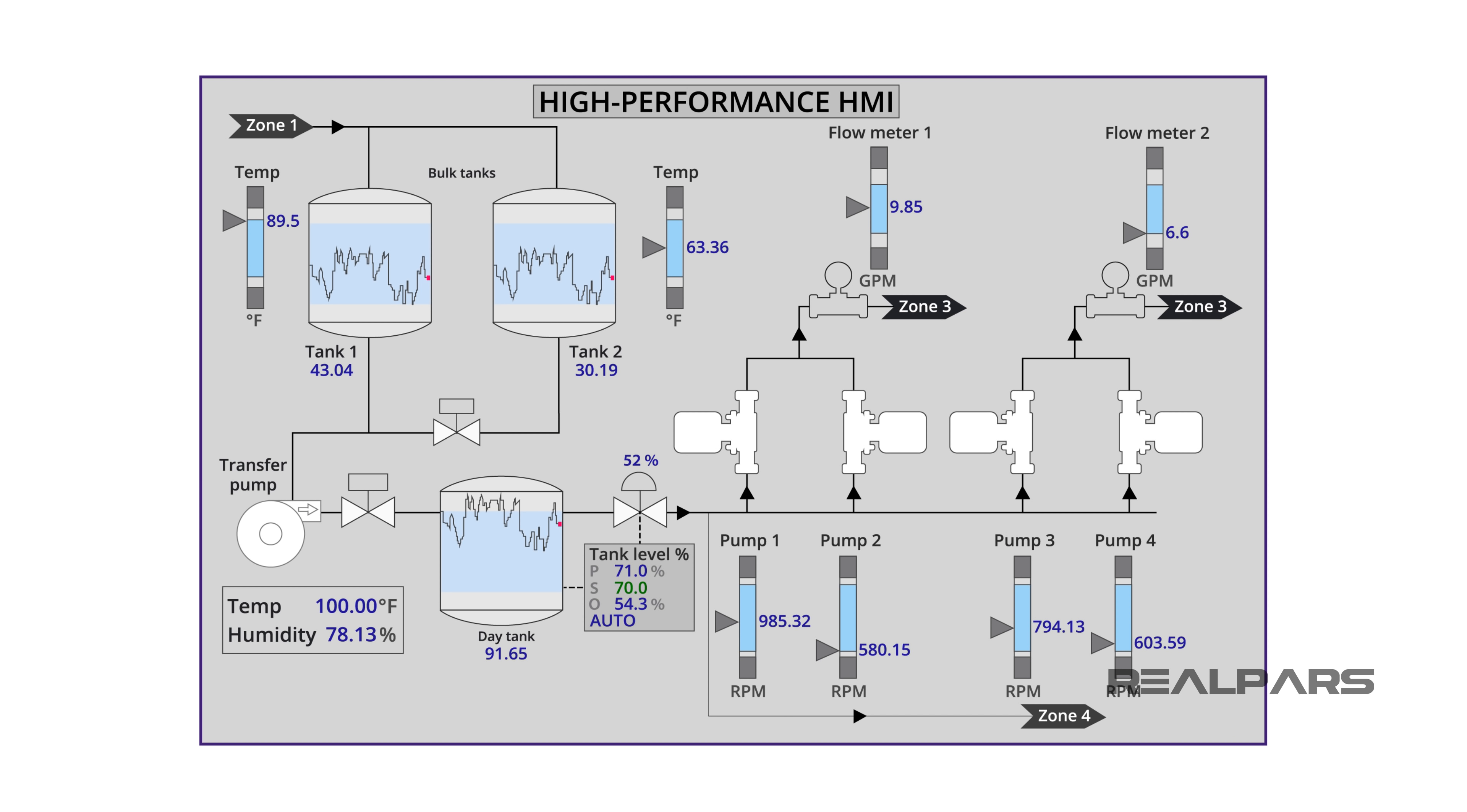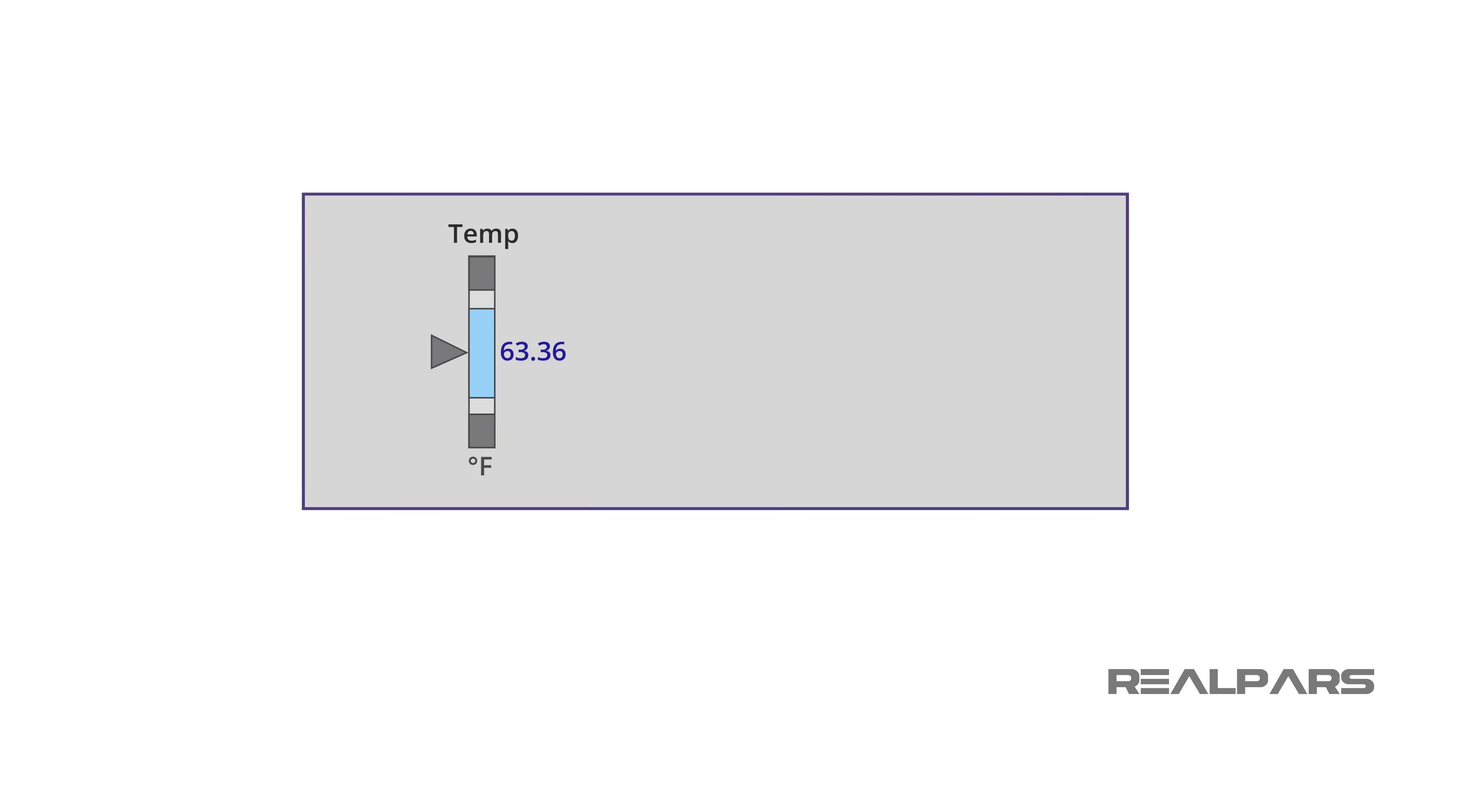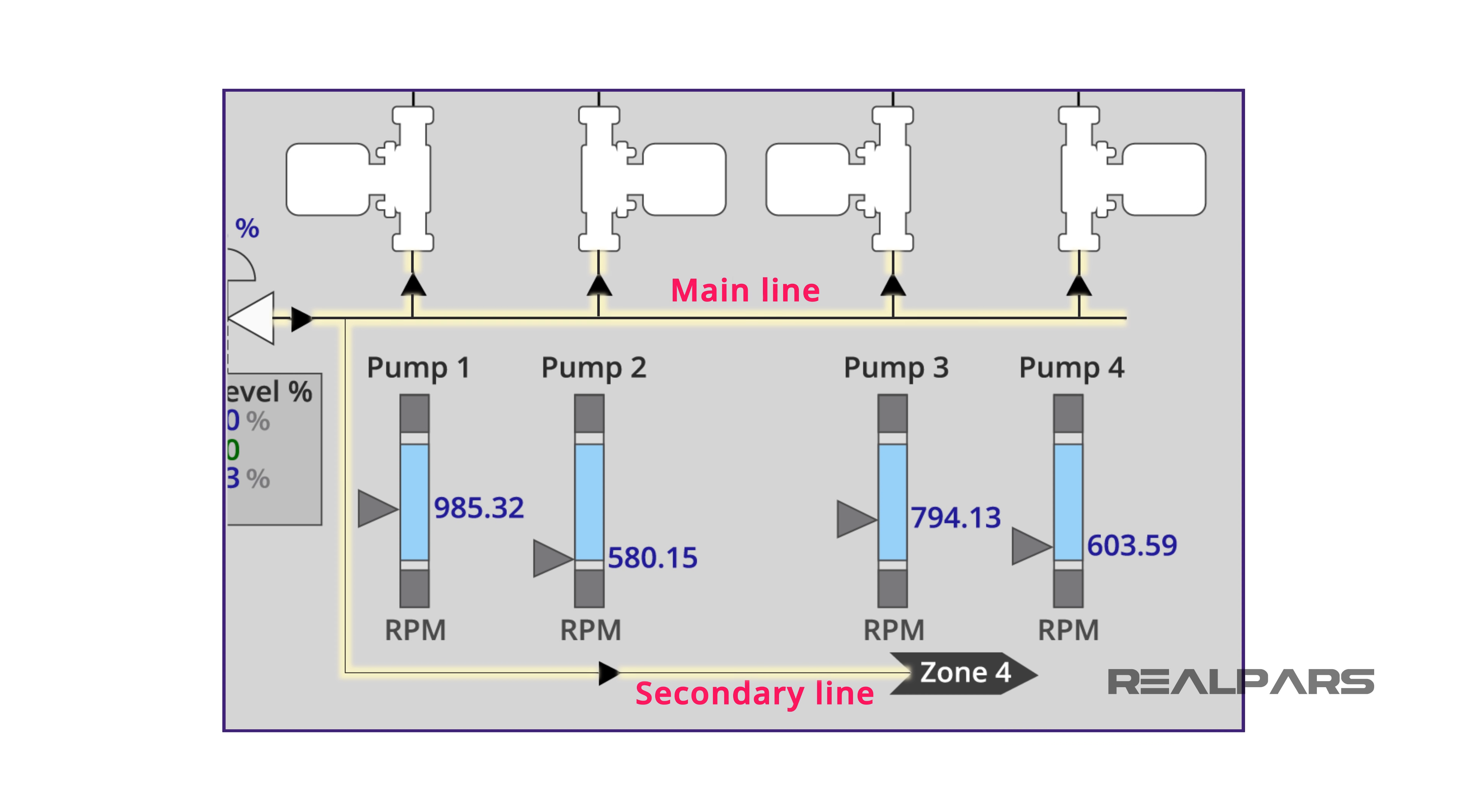Ok, let's review what we've learned in this video. Use analog indicators with a moving pointer instead of a numerical display. Access to trend data should be a top priority in your design. Grayscale is preferred over multiple colors. Screens should display correct process flow left to right. Text should be consistent across the entire HMI. Line weight or thickness is more important than color.